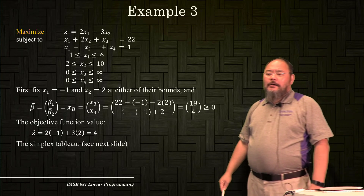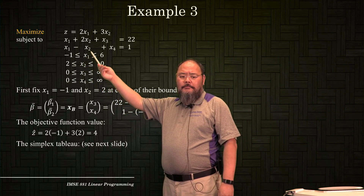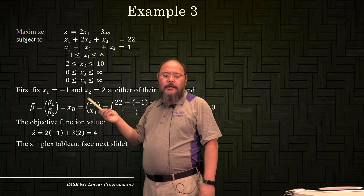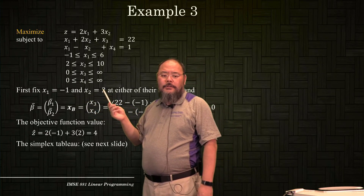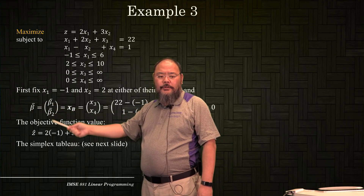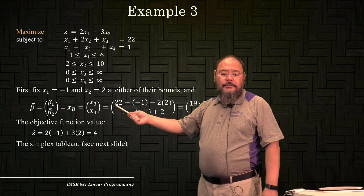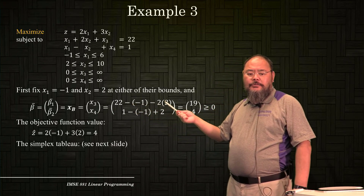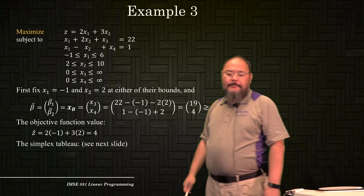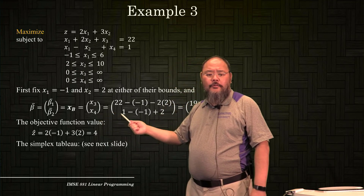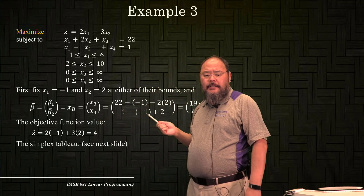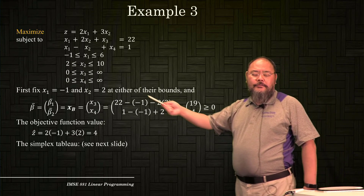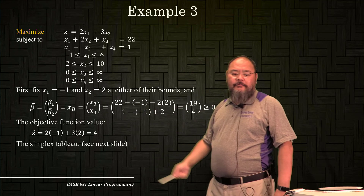If we set x1 and x2 at their lower bounds as a starting point — x1 equals -1, x2 equals 2 — then the basic solution gives x3 equals 22 minus (-1) minus 2 times 2, which equals 19. Also, x4 equals 1 minus (-1) plus 2, which equals 4. Both x3 and x4 are greater than or equal to 0, so this is a feasible solution to begin with.